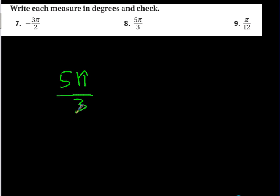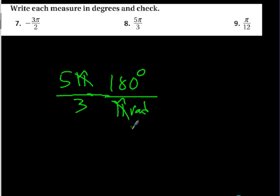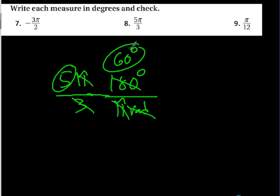Number 8: 5π/3 times 180 degrees over pi radians. The pi and radians cancel. 3 goes into 180 sixty times, and 5 times 60 gives 300 degrees.